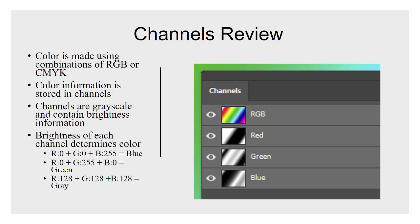I'll post a link in the Facebook group or discussion board where you can play a little game online to test your color knowledge — it'll display a set of colors and ask you to guess the RGB values. It's a lot easier than you think, and you'll start to understand quickly how colors combine together. So channels are simply grayscale brightness values that represent different colors, and we don't get color until we combine them.